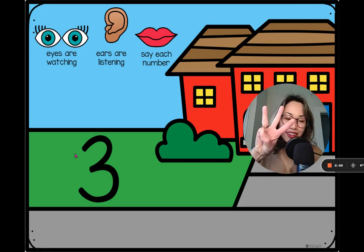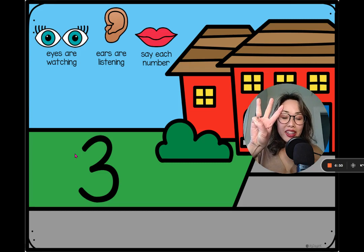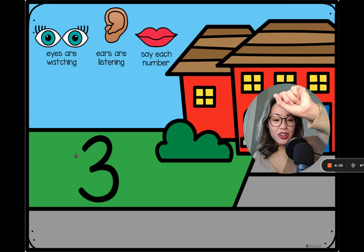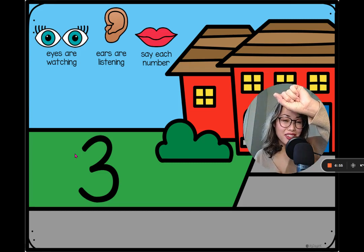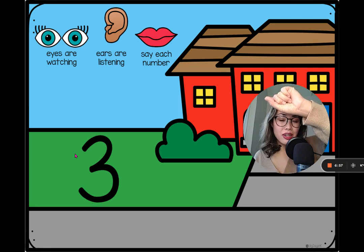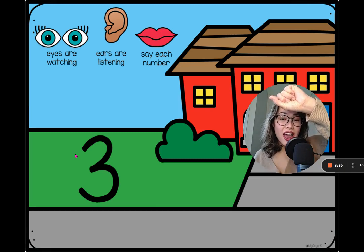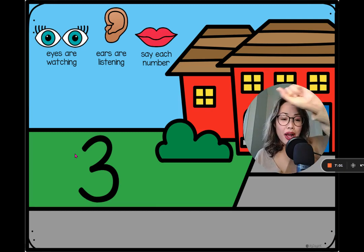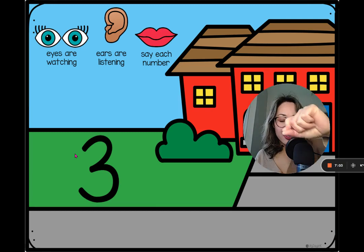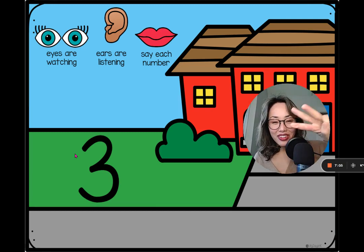Say it three, show me. And then write it in the air. So we all pick up an imaginary pencil and we write the number and I might say how to form it like around the tree, around the tree. That's how we make the number three.